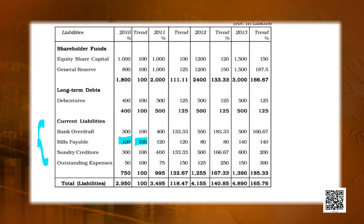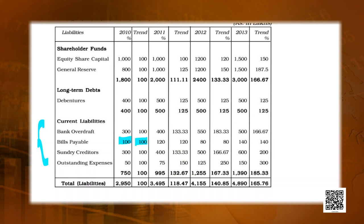Bills Payable base is 100, so the percentage is 100. In the next year it is 120 — when the base is already 100, it is the easiest calculation, making it 120%. In 2012 it falls to 80, so the trend goes downward to 80%. In 2013 it increases again to 140, so the trend shows Bills Payable have increased moving from 2012 to 2013, giving a percentage of 140.